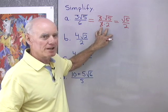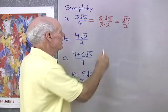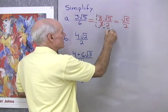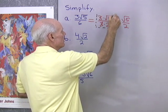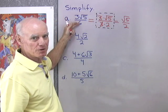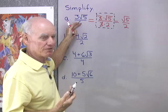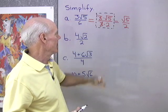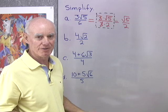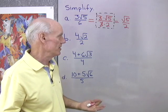This step right here you can kind of do in your head if you want — it's kind of a thinking step. What you're saying is there's a 3 common to the numerator and denominator, a factor of 3 common, and so you divide that out. What's left in the numerator is square root 5, and what's left in the denominator is 2.